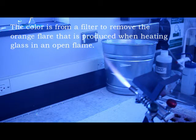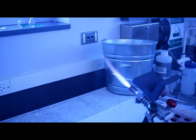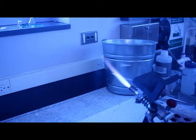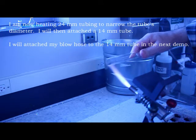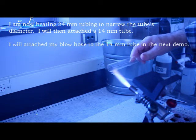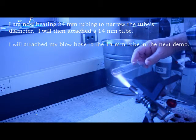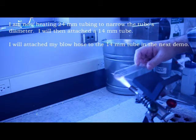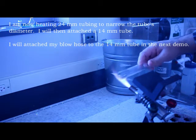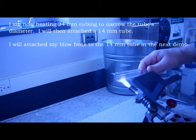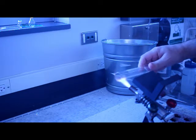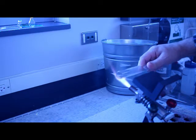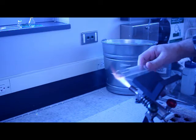First I'm going to be taking 24 millimeter glass tubing, and all of this glass tubing is borosilicate. I'm going to heat the end of it and basically try to narrow the 24 millimeter closer to 14 millimeter, that way when I seal the two of them together it's a little bit easier to get them seated. The 14 millimeter tubing is for a blow hose that I'm going to attach.